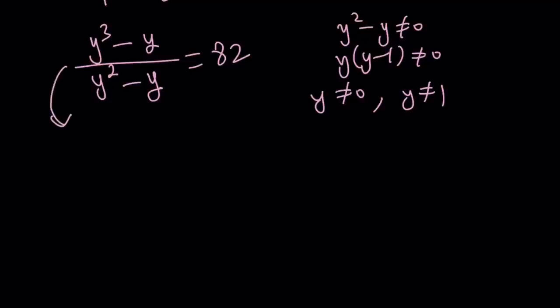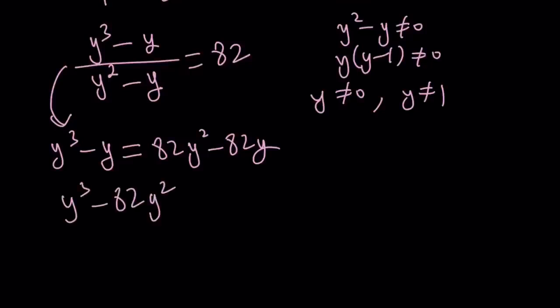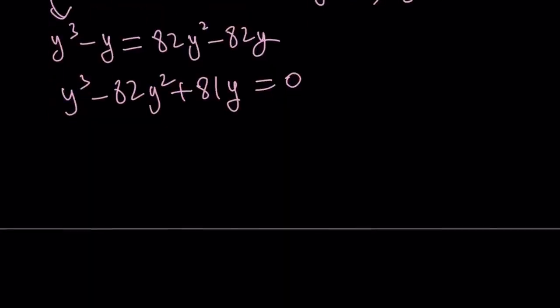Let's go ahead and cross multiply and get a cubic equation from here. y cubed minus y equals 82y squared minus 82y. Let's put everything on the left hand side. y cubed minus 82y squared plus 81y equals 0. Now even though this is a cubic equation, it's very easy to solve, because you can factor it. So y take out, you get y squared minus 82y plus 81 equals 0.